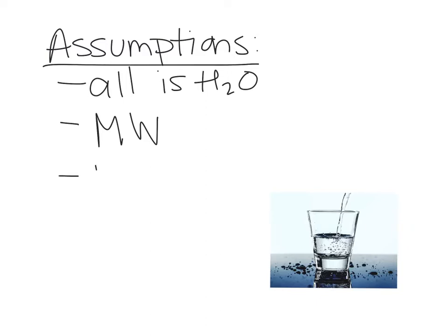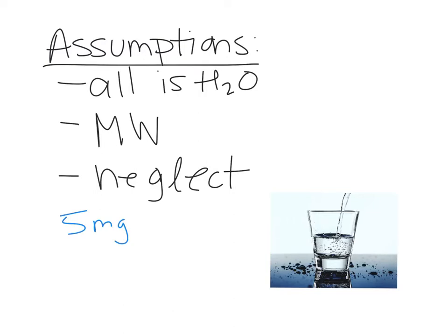Third, we neglect ingredients present in very small amounts. For example, if we have 5 milligrams of sodium, that gets divided by 1,000 and then divided by its molecular weight of about 22.99, giving us a really small number that won't meaningfully affect our final answer, so we can neglect it.